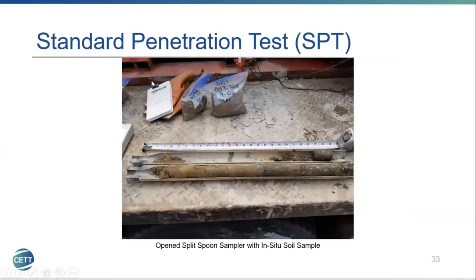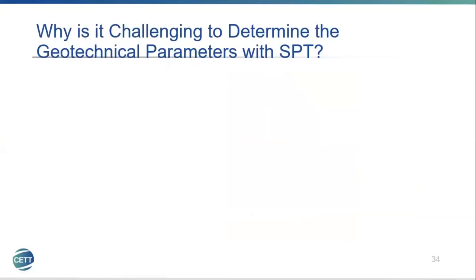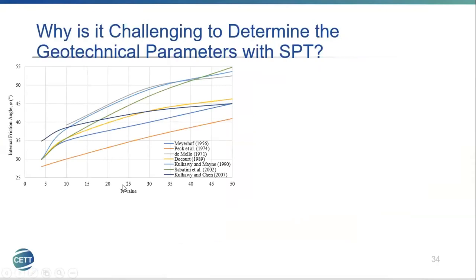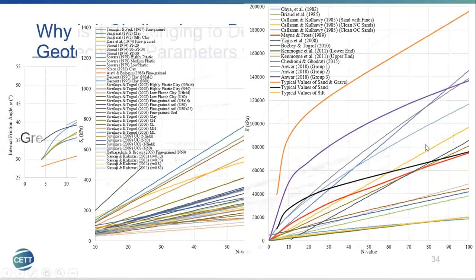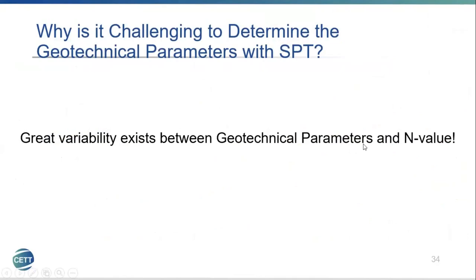The challenge with determining geotechnical parameters from SPT can be seen in the correlations between friction angle and N-value, undrained shear strength and N-value, and modulus of elasticity and N-value. There is great variability between the geotechnical parameters and the N-value, which makes it very difficult for practitioners, especially those without geotechnical expertise, to make accurate judgments.